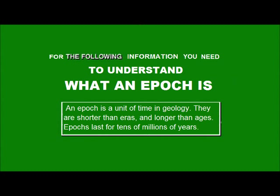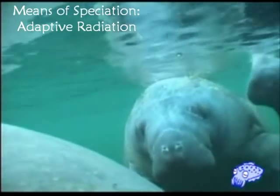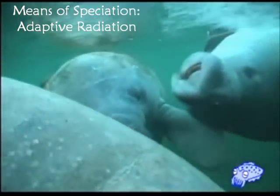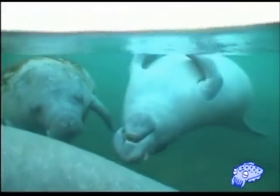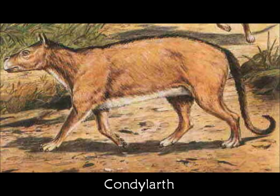For the following information, you need to understand what an epoch is. An epoch is a unit of time in geology — they are shorter than eras and longer than ages, and they last for tens of millions of years. The means of speciation in manatees was adaptive radiation, because from the common ancestor of the condylarth, several species broke off and evolved separately because of different environments.